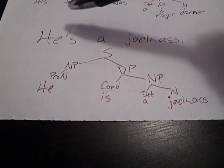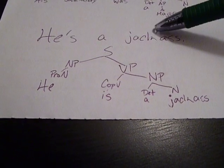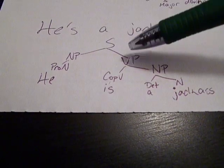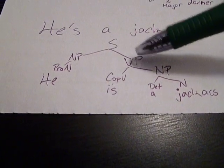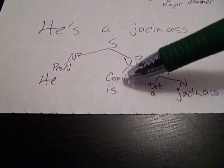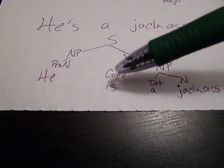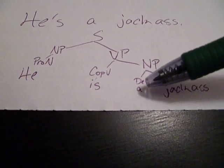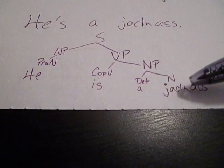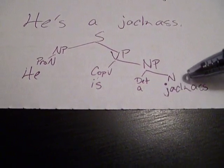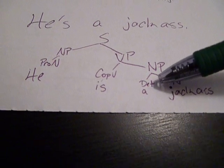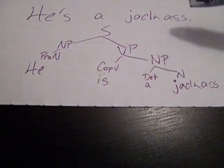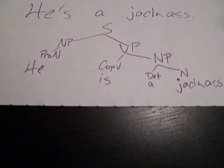First, we need to do a normal sentence so you can see: 'he's a jackass.' You have your sentence, your noun phrase pronoun 'he,' then your verb phrase or predicate. Then you have your copula verb 'is,' which is essentially like an equal sign. Then you have your noun phrase 'a jackass' — your determiner 'a' over 'jackass.' The way you can know jackass is a noun is because you have to use 'a.' You can't say 'a quick' or 'a happy.'